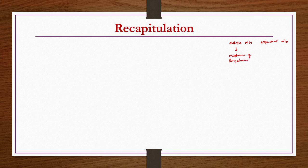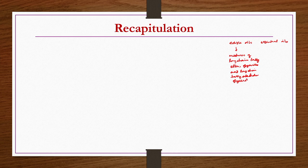Before going into the details of today's lecture, we will have a recapitulation of what we discussed in the previous lecture. We started with the definitions of oils — edible oils and essential oils. Edible oils are nothing but mixtures of long-chain fatty esters such as glycerides, and derivatives such as long-chain fatty alcohols, glycerin or glycerol. These are the edible oils.